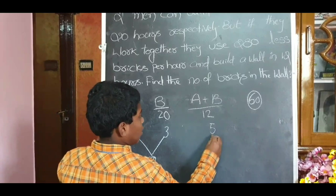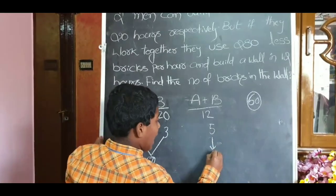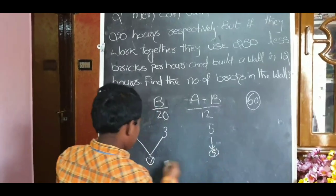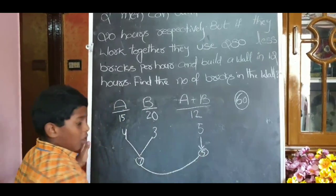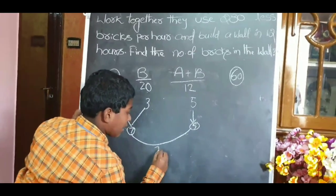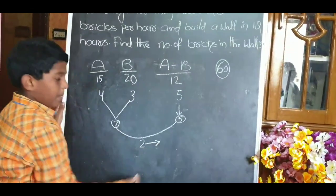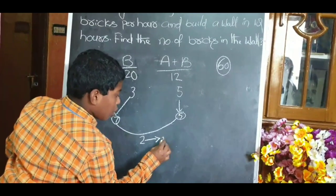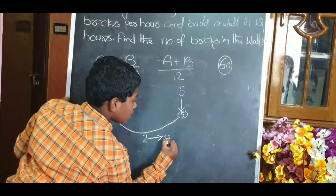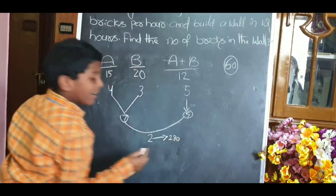But they don't need 5 units. So 2 units are less. 2, 80 bricks are less.